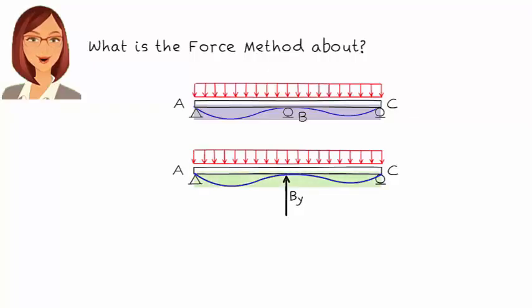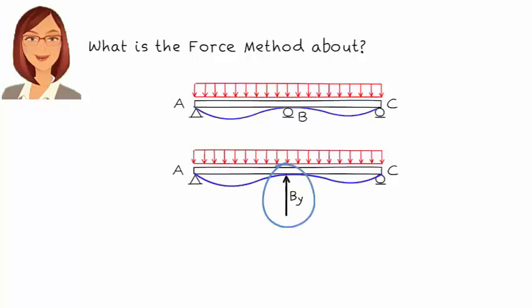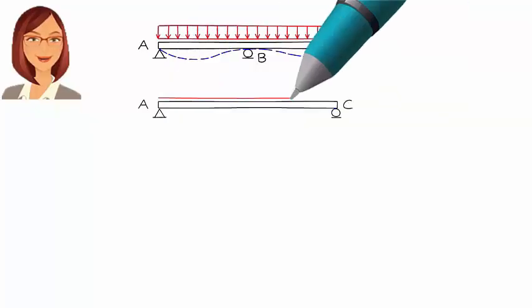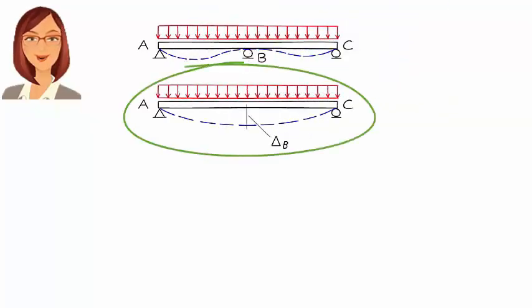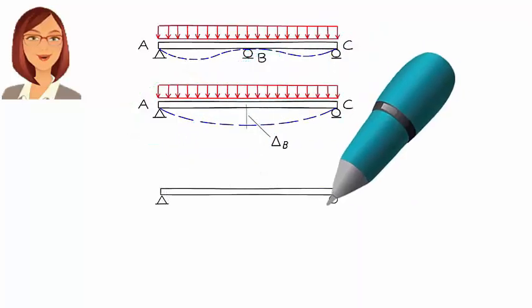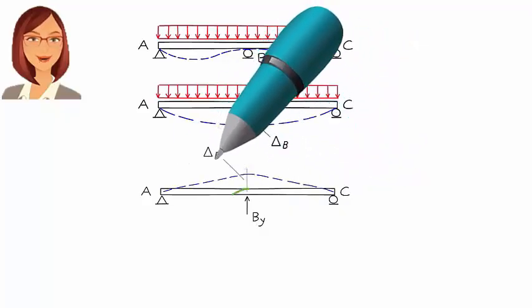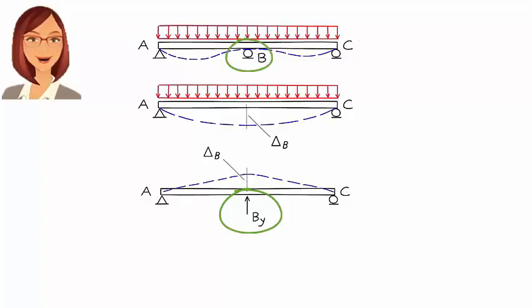Their displaced shapes are identical. Since the two beams have identical geometric shape and properties, and their load and displacement patterns are the same, then they must have identical external and internal forces. Therefore, By here must be the support reaction at B. So to determine the support reaction at B, all we have to do is calculate delta_B in this beam, then determine the force magnitude that causes an upward deflection of delta_B in this beam. This upward force represents the vertical reaction at B in the statically indeterminate beam.